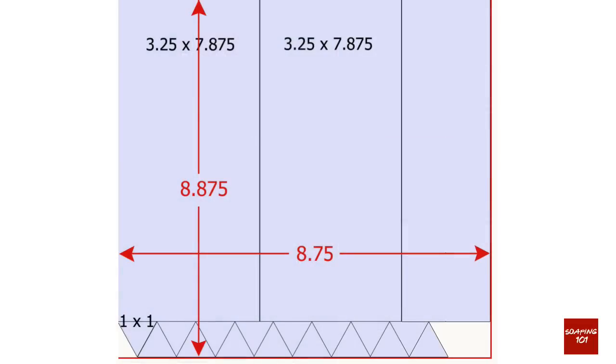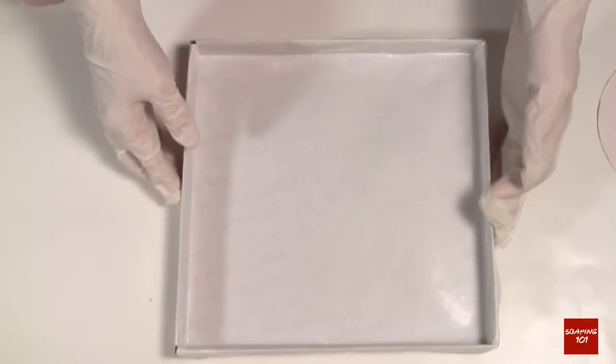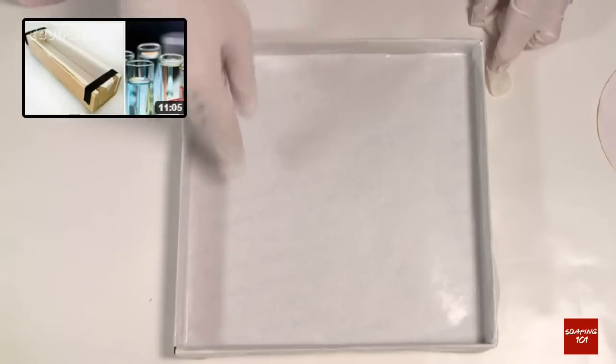The first thing that I did was to measure my loaf mold and determine what size my embed should be. I plotted them out on a piece of paper and created a throwaway box to fit. I calculated how many ounces of soap would fill the mold based on our lesson from week 6.